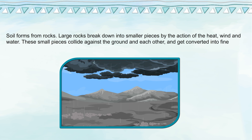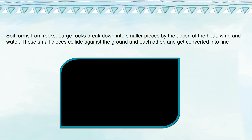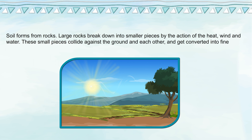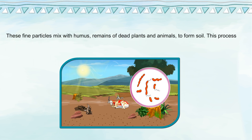These small pieces collide against the ground and each other and get converted into fine particles. These fine particles mix with humus — remains of dead plants and animals — to form soil. This process of formation of soil is called weathering.